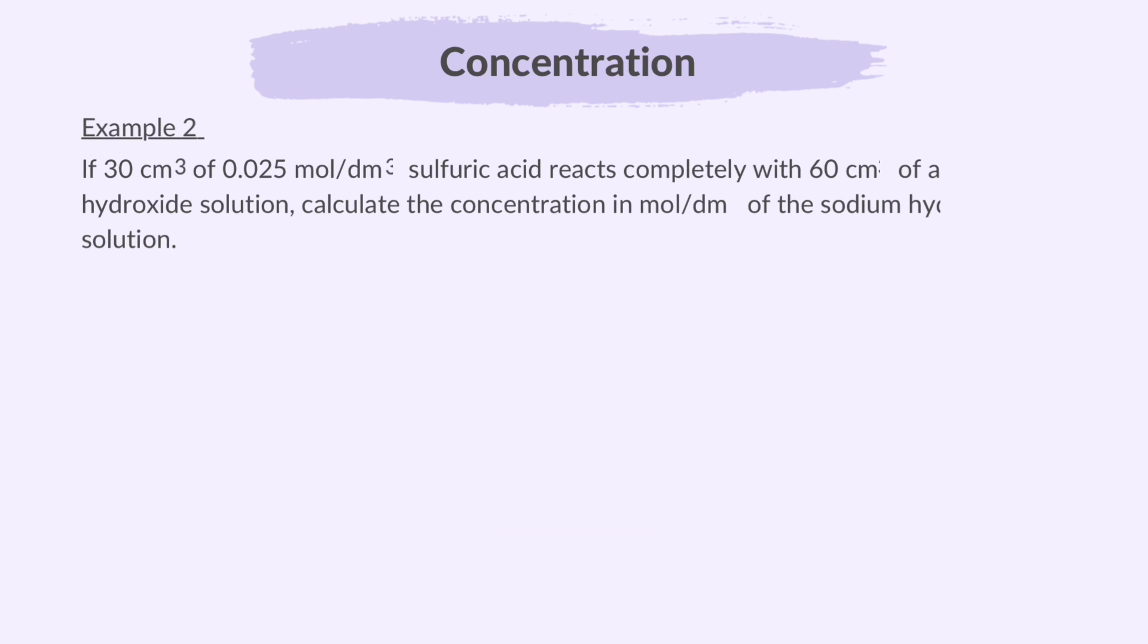Let's look at the following example. If 30 cubic centimeters of 0.025 moles per dm cubed of sulfuric acid reacts completely with 60 cubic centimeters of sodium hydroxide solution, calculate the concentration in mole per dm cubed of the sodium hydroxide solution. Here's the balanced equation for this reaction.